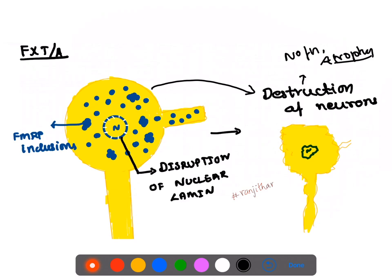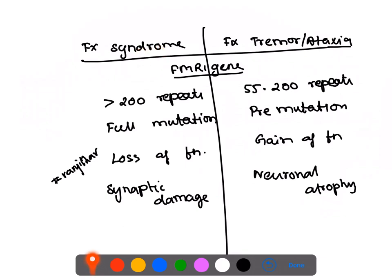For MCQ purposes, the key differences are: both conditions involve the same FMR1 gene. Fragile X Syndrome has greater than 200 repeats — a full mutation — causing methylation and loss of function, leading to synaptic damage and mental retardation. Fragile X Tremor Ataxia has 55 to 200 repeats — a pre-mutation — causing increased FMRP production, neuronal atrophy, and ataxia-like symptoms. They are a spectrum of the same gene but present very differently.